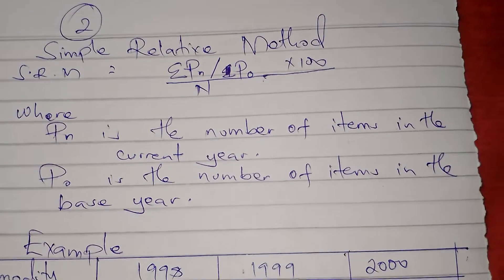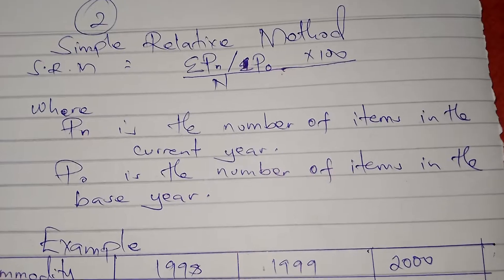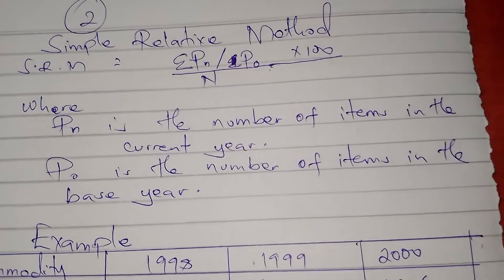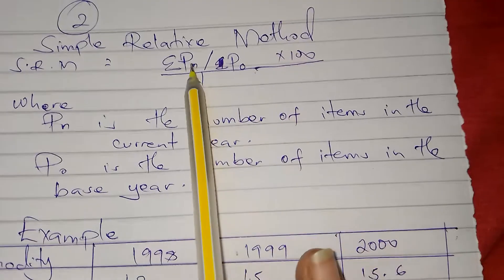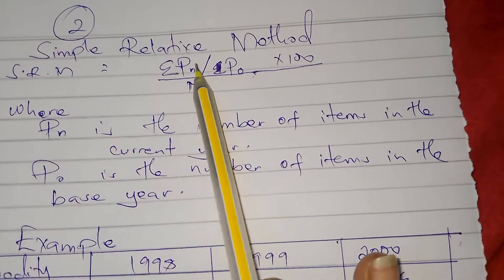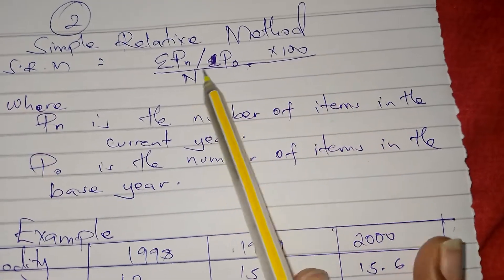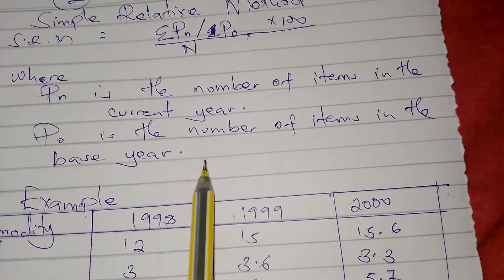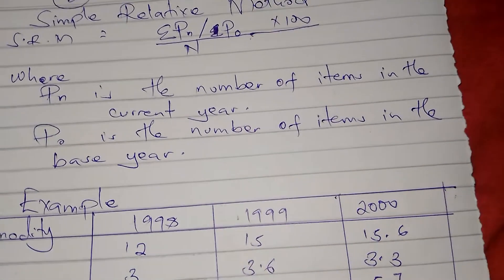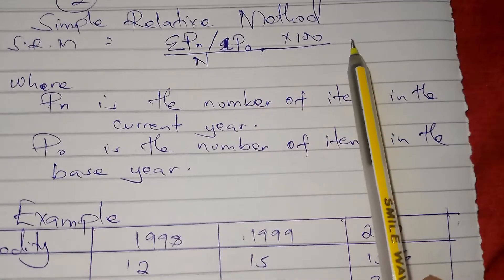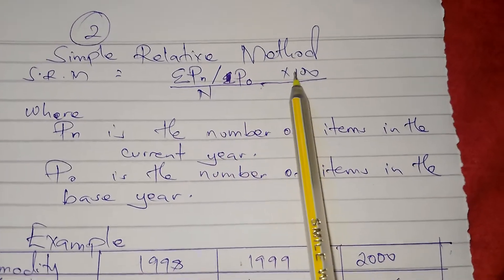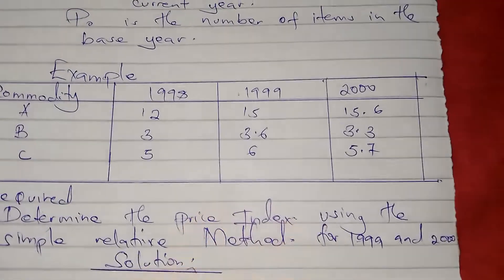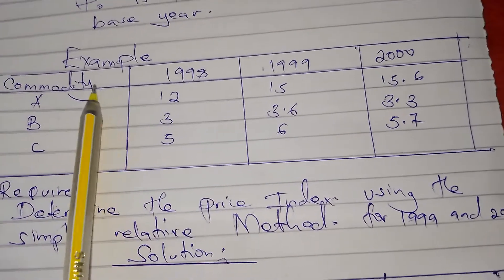Let's look at another method for calculating the price index for unweighted items. It is called the simple relative method, and the formula is: summation of (Pn / P0) times 100, divided by n — where Pn is the price in the current year, P0 is the price in the base year, and n is the number of items.